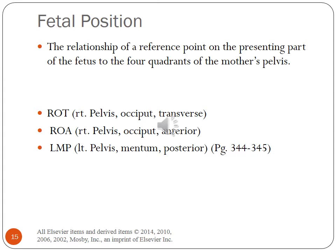Let's discuss fetal position — the relationship of a reference point on the presenting part of the fetus to the four quadrants of the mother's pelvis. ROT is right occiput transverse, ROA is right occiput anterior, and LMP is left mentum posterior. This information is on pages 344 to 345 of your textbook.